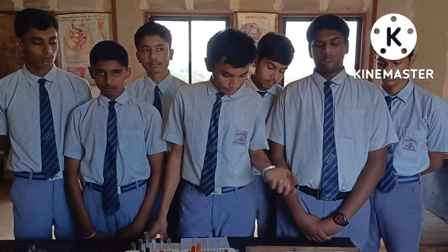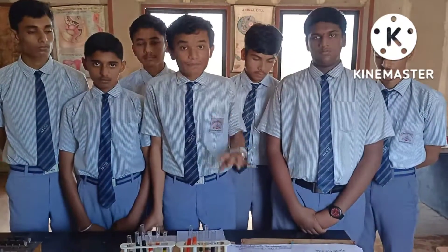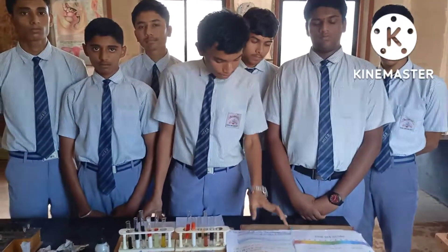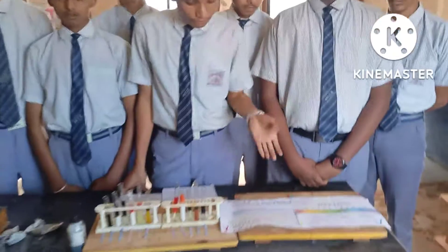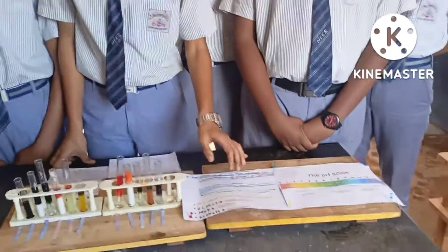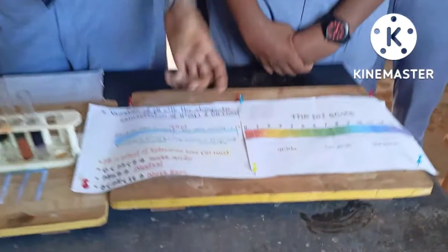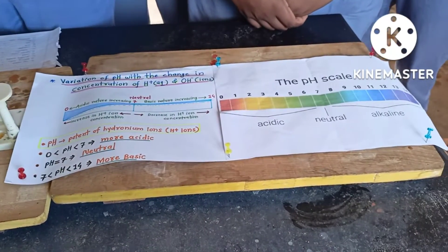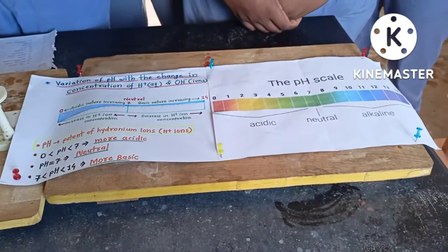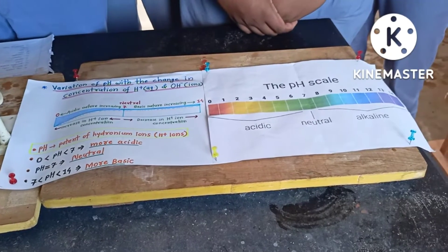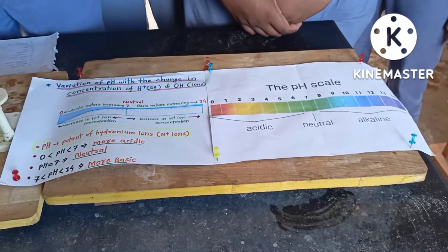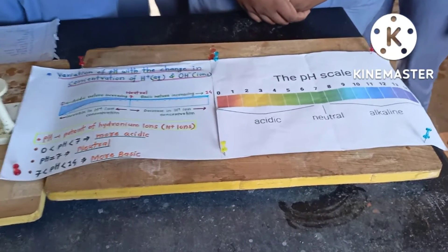We will now come toward the pH paper. What is pH? pH is a scale which tells us how acidic or basic a substance is.